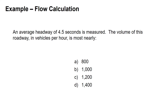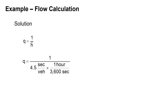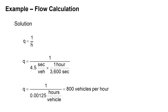Let's look at an example flow calculation. We're told we have an average headway of 4.5 seconds and we're asked to find the volume of this roadway in vehicles per hour. Using Q equals one divided by the average headway: Q equals one divided by 4.5 seconds per vehicle. Converting to hourly units using 3600 seconds per hour gives Q equals one divided by 0.00125 hours per vehicle, which equals 800 vehicles per hour.